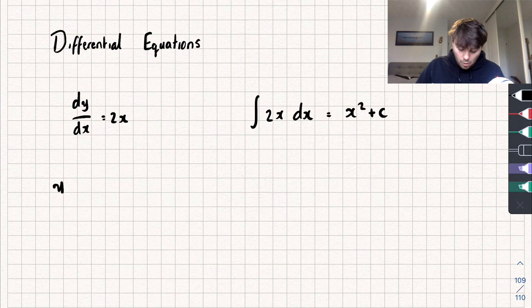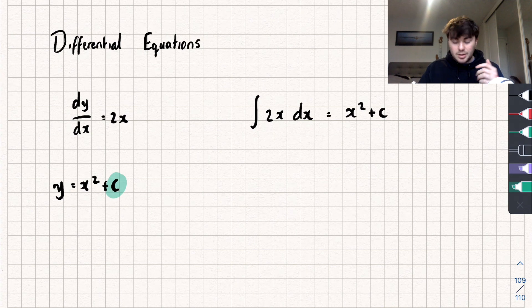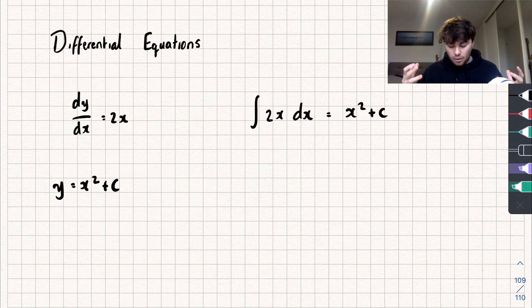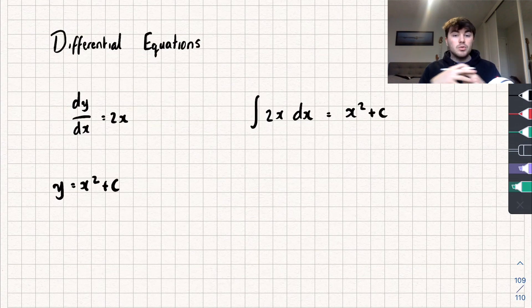Y equals x squared plus c - we call this the general solution. The reason for that is because it's got this plus c and that value of c, this constant of integration, could be any number we wanted. If we set it equal to 1 and then differentiate we get 2x, if we set it equal to a million and differentiate we get 2x, so there's infinitely many solutions.